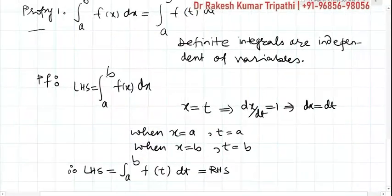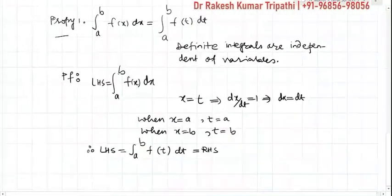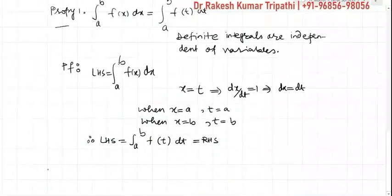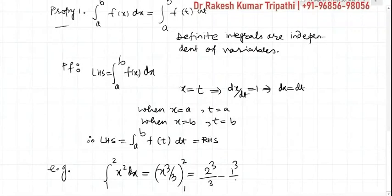Now this property can be experienced through the following example. Example: ∫₁² x²dx is equal to x³/3 with lower limit one and upper limit two. On substituting: 2³/3 minus 1³/3, which you can calculate, and the value is 7/3. Similarly,